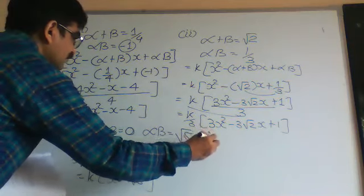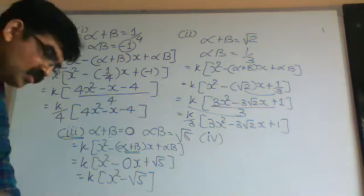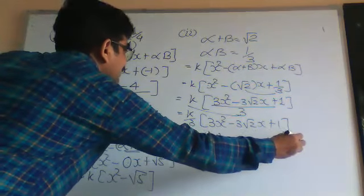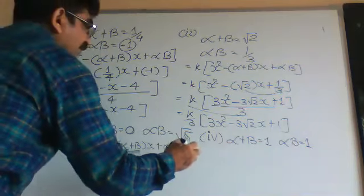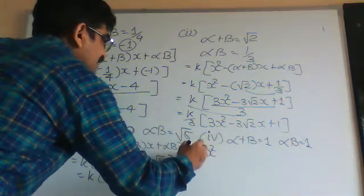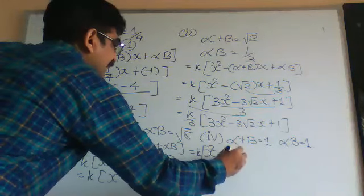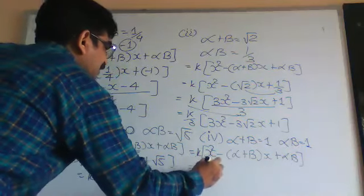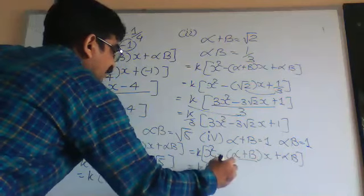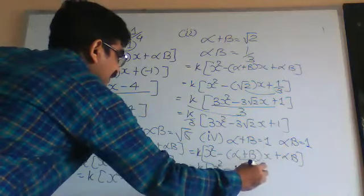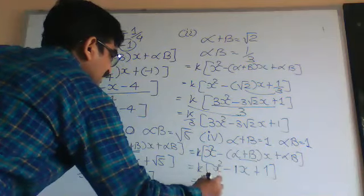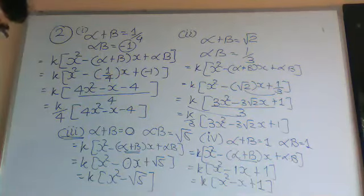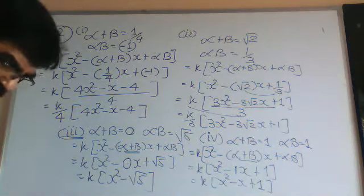Now look at Number 4. α + β is given as 1 and α·β is also 1. Using the formula k into [x² minus (α+β)x plus αβ], we put the values in: x² minus 1·x plus 1, which gives x² - x + 1. That is your answer. So we have now concluded Question Numbers 1, 2, 3 and 4.